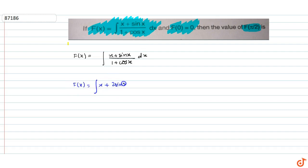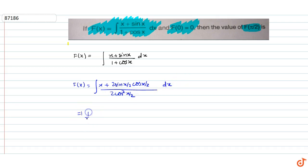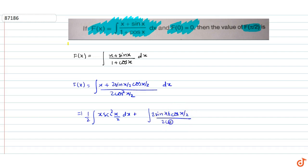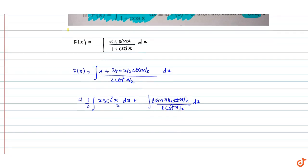We rewrite this as the integral of (x + 2·sin(x/2)·cos(x/2)) / (2·cos²(x/2)) dx. Separating the terms, we get (1/2)·integral of x·sec²(x/2) dx plus the integral of (2·sin(x/2)·cos(x/2)) / (2·cos²(x/2)) dx. The 2s cancel out.